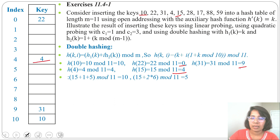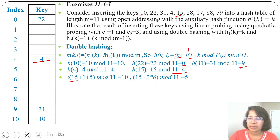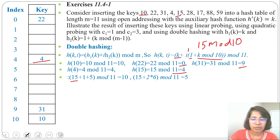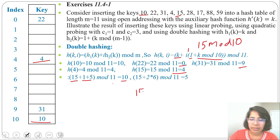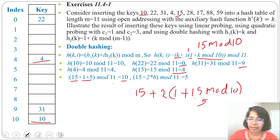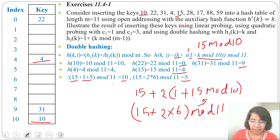Now we'll use double hashing. k = 15. For i = 1: 15 + 1 * (1 + 15 mod 10) mod 11 = 15 + 1 * (1 + 5) mod 11 = (15 + 6) mod 11 = 10. Slot 10 is already filled. For i = 2: (15 + 2 * 6) mod 11 = (15 + 12) mod 11 = 27 mod 11 = 5. Slot 5 is empty, so insert 15 at slot 5.